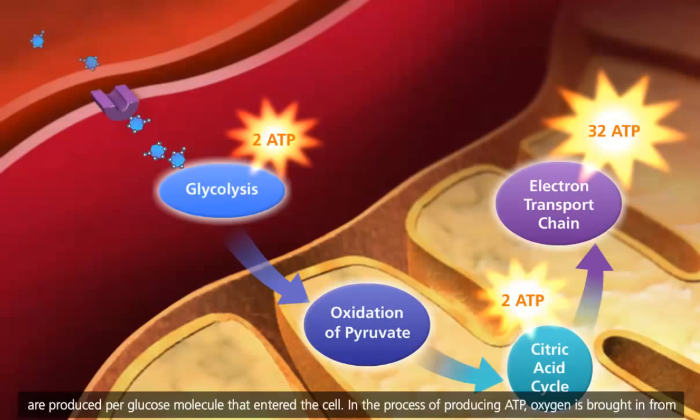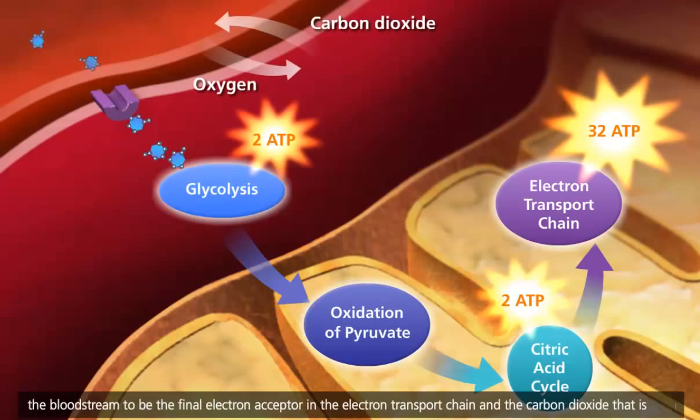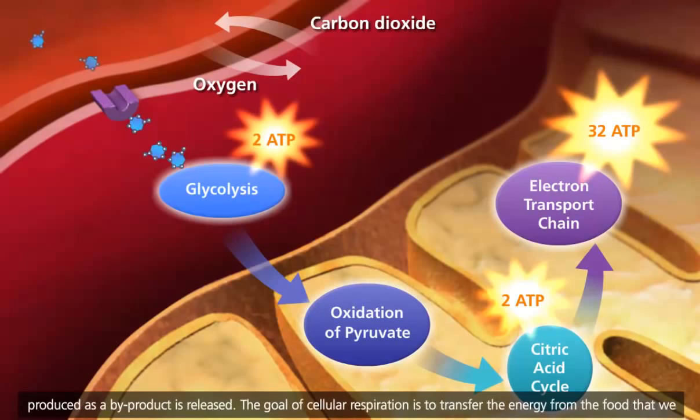In the process of producing ATP, oxygen is brought in from the bloodstream to be the final electron acceptor in the electron transport chain, and the carbon dioxide that is produced as a byproduct is released.